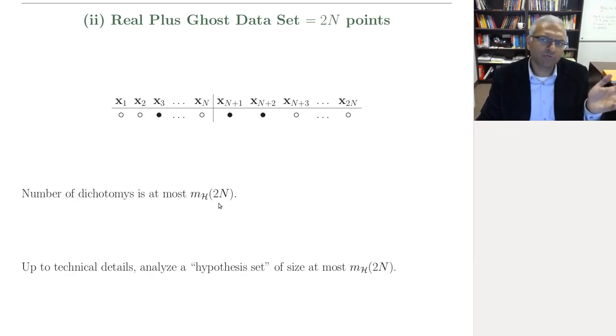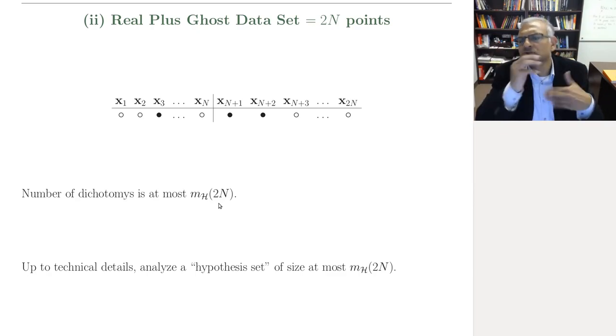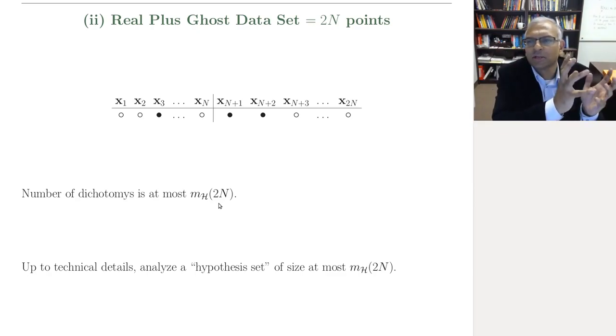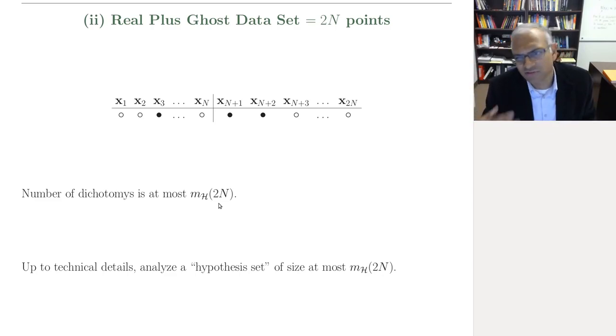But no problem. If the growth function for n is polynomial, so n to the k, then the growth function for two n is two n to the k, which is two to the k times n to the k. That's a constant because the breakpoint is a constant number k. So it's just a factor. It doesn't affect the polynomial nature.